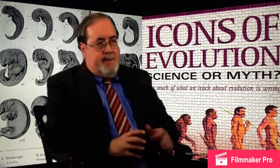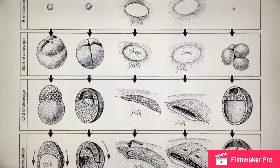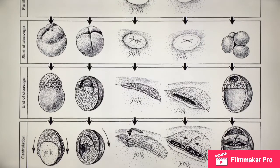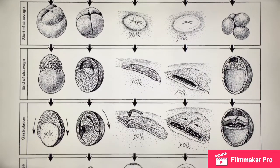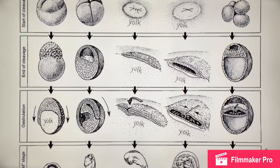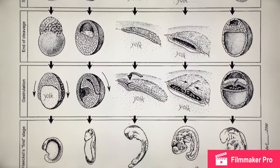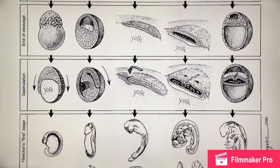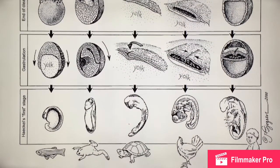These drawings became quite famous. They show, typically in the first row, embryos that look almost identical — embryos supposedly of fish, salamander, turtle, chicken, and various mammals. And then as they develop, these embryos become more and more different until we see the actual adult fish, salamander, turtle, and so on.